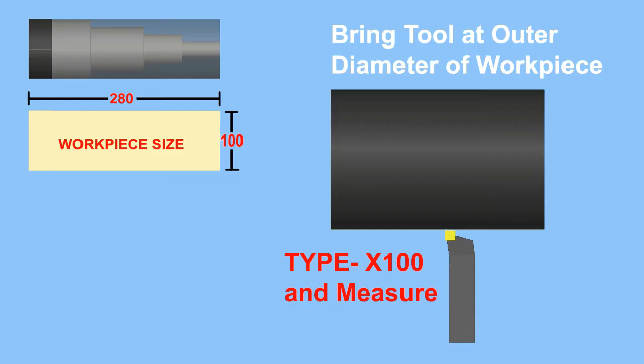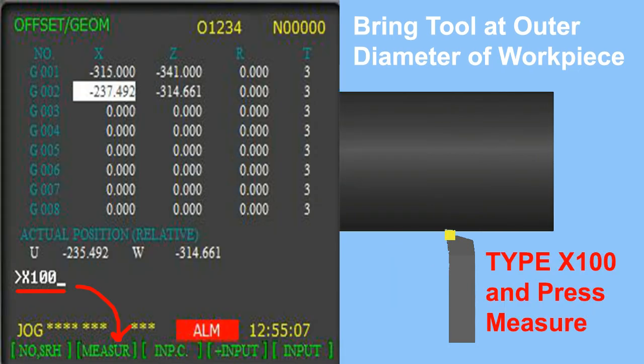We have touched our tool to the outer diameter of the workpiece, which is 100 mm. So let's use offset number 02. Bring your cursor to X, then type X100.0 — that is X with the diameter value of the workpiece.